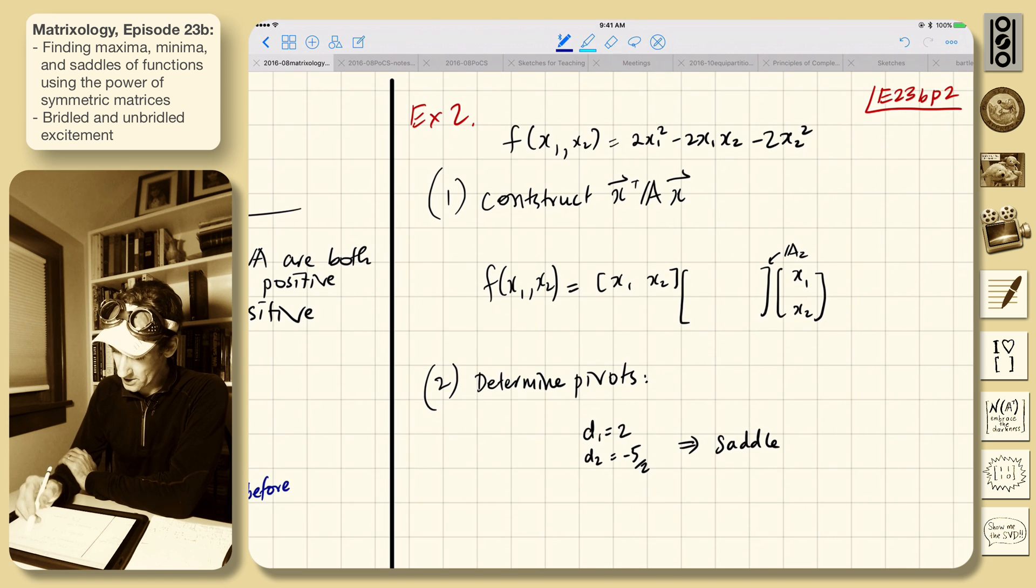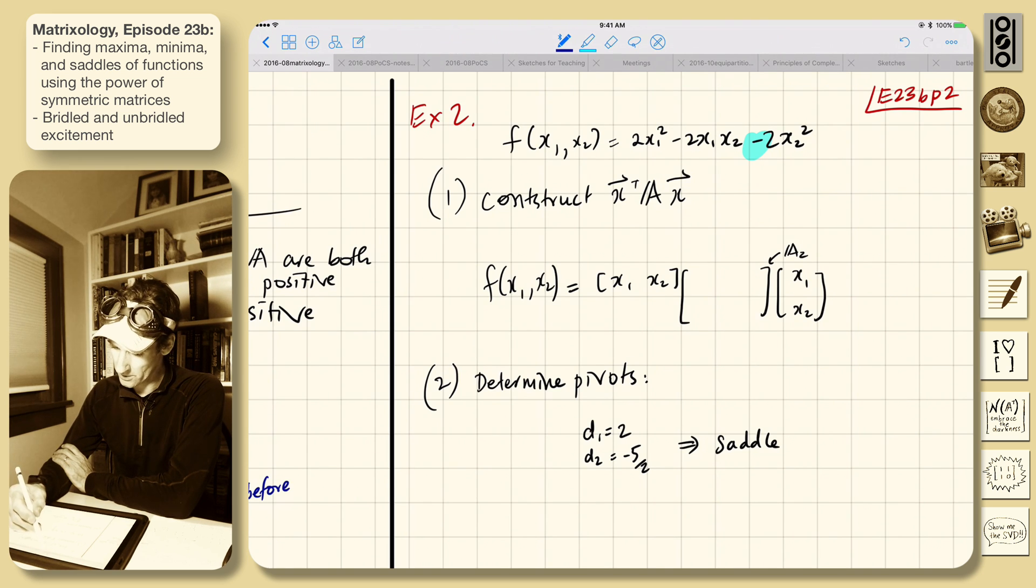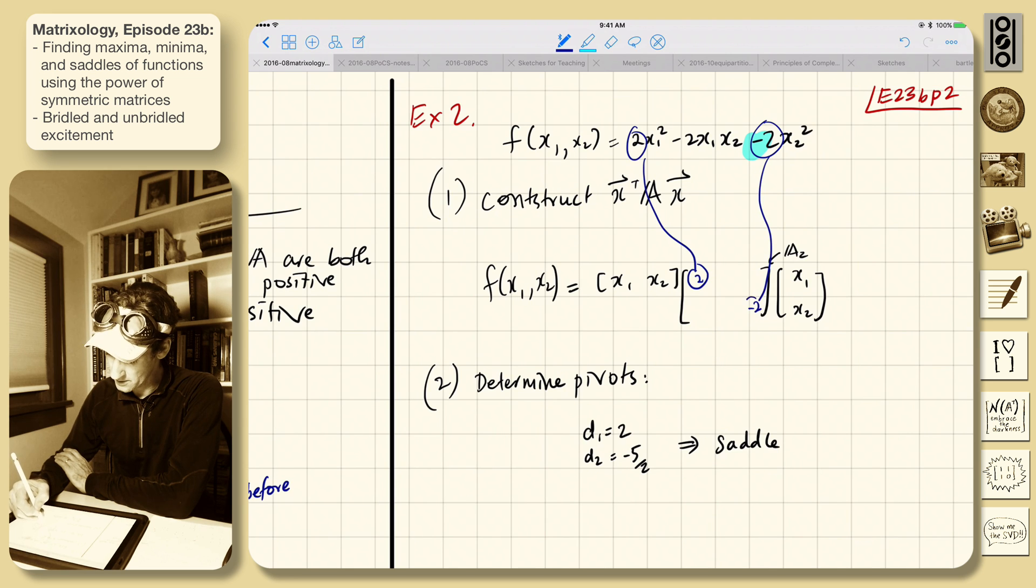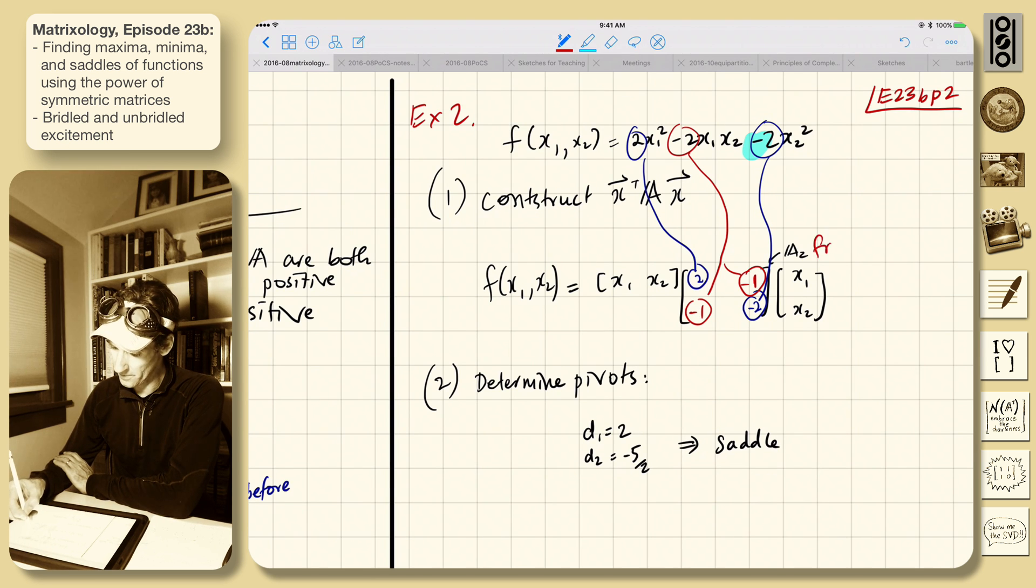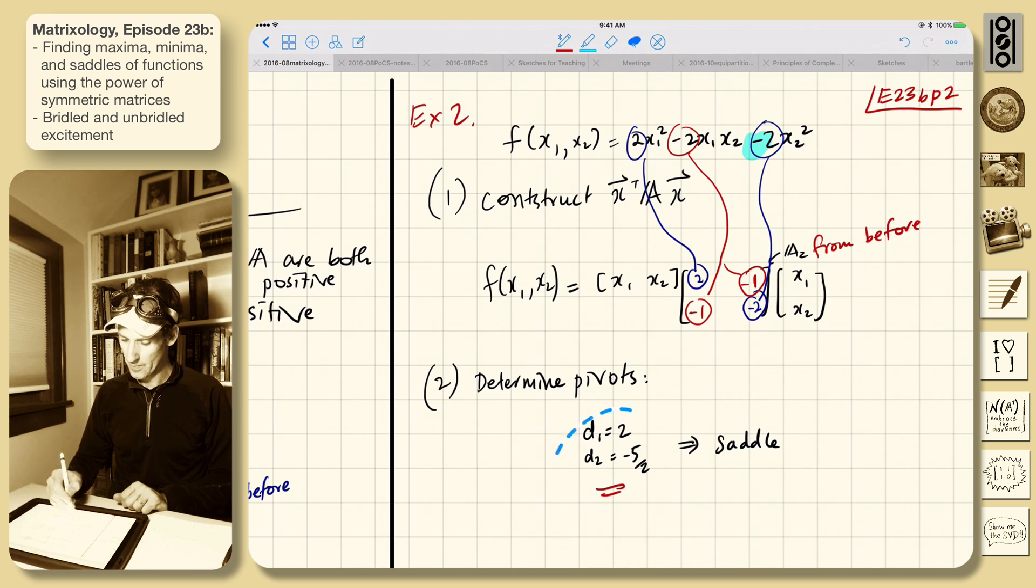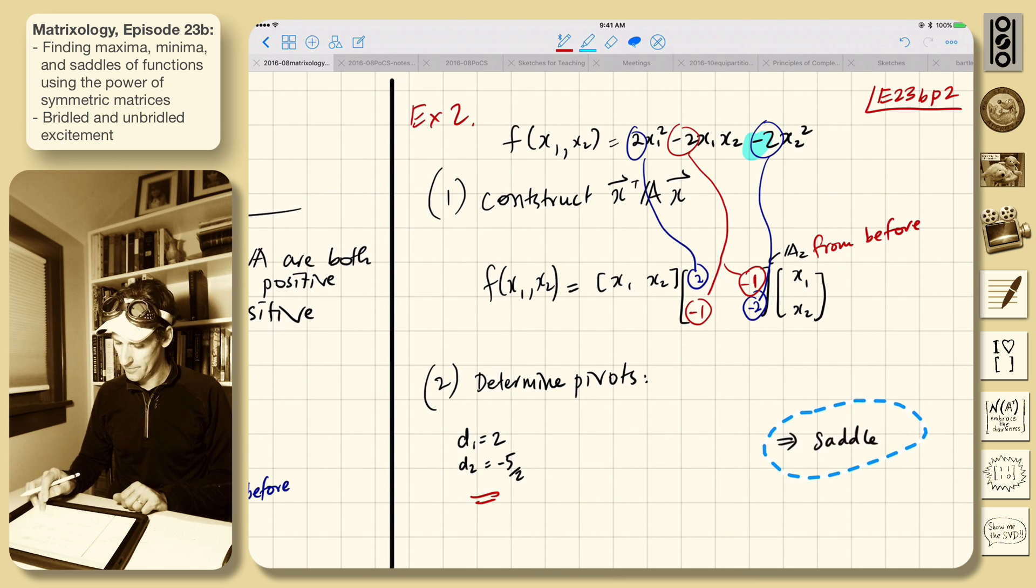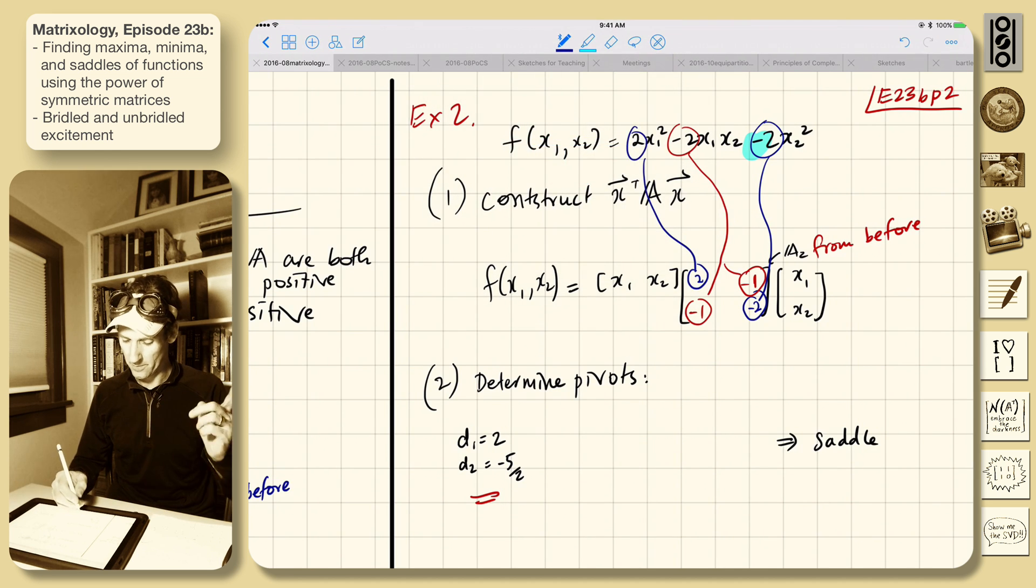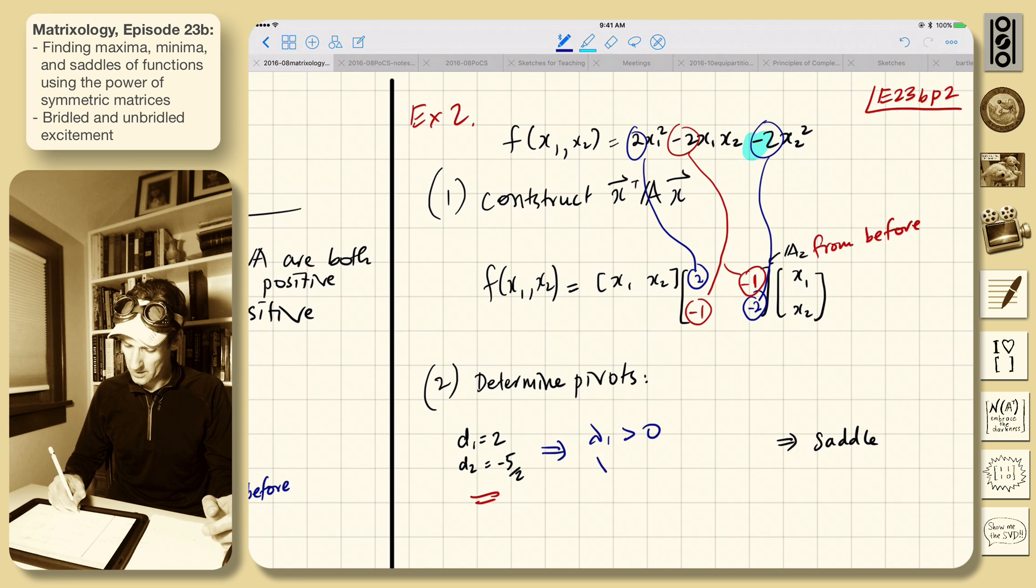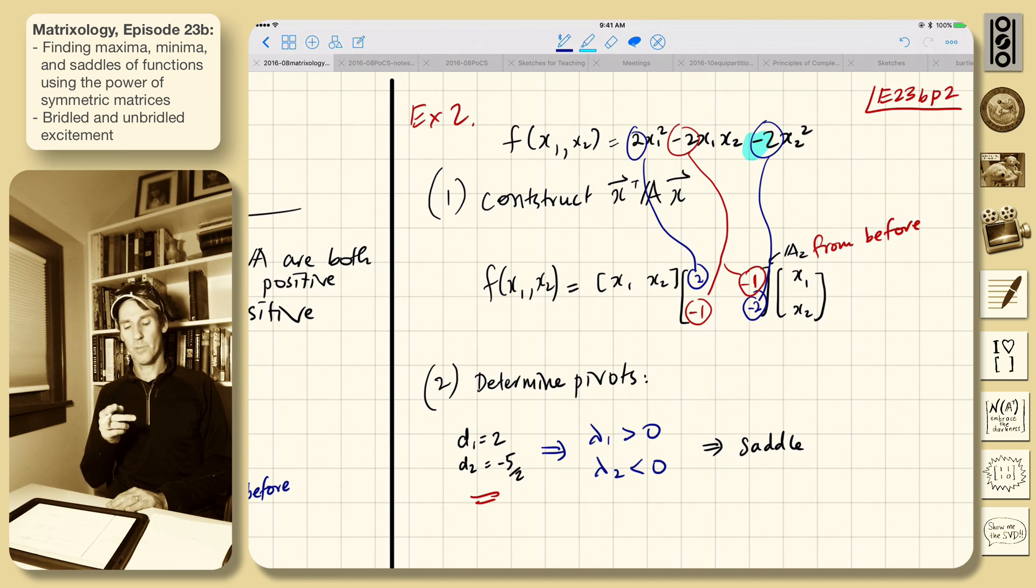Alright. Then this is one slight change, it's just here, minus sign. Again, construct X transpose AX. So we'll do the same thing. This 2 goes into here, this minus 2 goes into here. And then we'll split this minus 2 here, so minus 1 goes into here, and minus 1 goes into here. This is A2 from before. And we'd already established that these were the pivots. So this implies that the pivots, lambda 1 is greater than 0, lambda 2 is smaller than 0. So that's a saddle. Good.